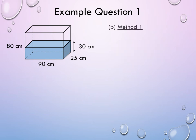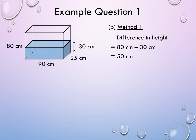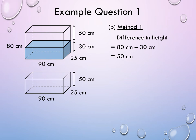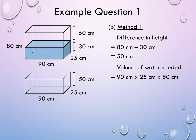Let's look at part B. There are two methods. For method 1, we can first find the difference in height between the height of the tank and the height of the water. So, this is 80 centimeters minus 30 centimeters, which gives us 50 centimeters. Notice that the remaining space in the tank looks like a cuboid, so we can use the formula for volume of a cuboid to find the volume of the remaining space. The volume of water needed to fill up the tank completely is equal to 90 centimeters times 25 centimeters times 50 centimeters, and we get 112.5 liters.